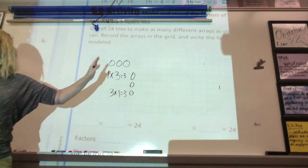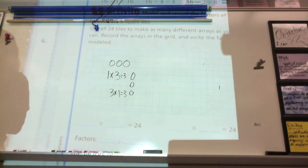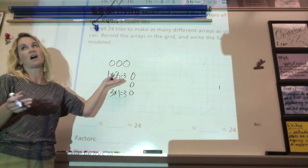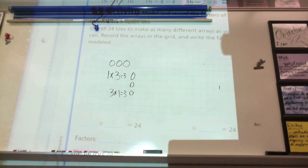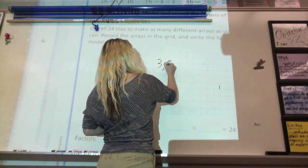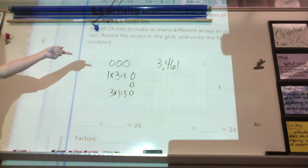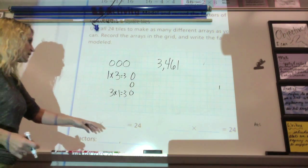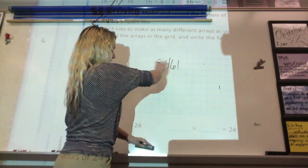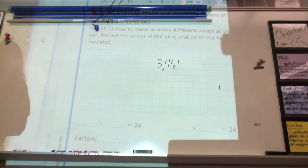But what I want you to notice is that every number that's greater than 1, so starting with what number? 2. 2 and all the numbers after, have at least 1 times that number to make an array. So, if I gave you the number 3,461, do I know any arrays that I can make for that? Yes.